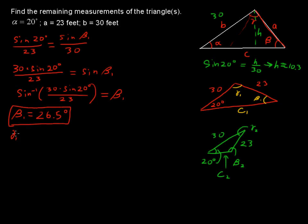Gamma sub 1 can be found by saying that's 180 degrees minus the other angles that we've used up. So minus the 20 degrees minus the 26.5. So gamma sub 1 equals 133.5 degrees. That's two things that we're looking for.